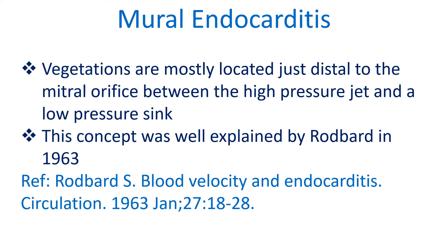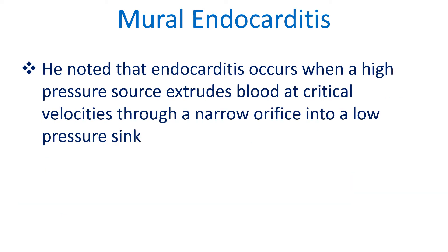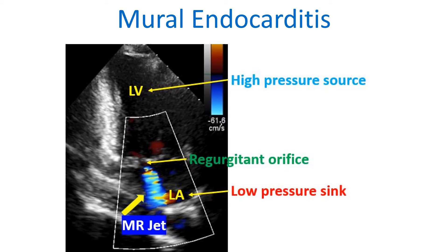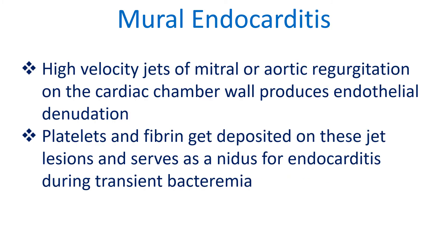This concept was well explained by Rodbard in 1963. He noted that endocarditis occurs when a high pressure source extrudes blood at critical velocities through a narrow orifice into a low pressure sink. This picture illustrates the concept of high pressure source, narrow regurgitant orifice, and low pressure sink. High velocity jets of mitral or aortic regurgitation on the cardiac chamber wall produce endothelial denudation.